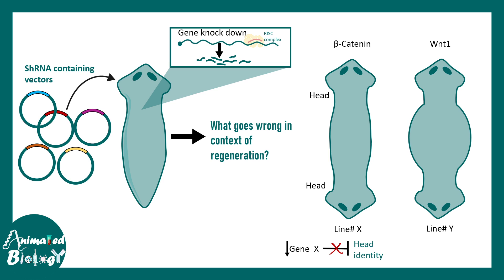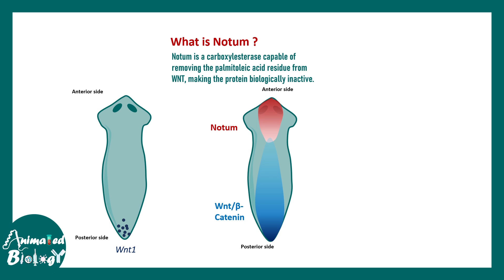In more detail: Wnt1 molecules are specifically expressed on the posterior side — they are posterior-preferring molecules that prevent anterior identity. There is also a Wnt inhibitor present on the anterior side of the head. Wnt is produced from the posterior side, but Wnt signaling is inhibited on the anterior side. Notum is the molecule responsible — it is a classic inhibitor of canonical Wnt signaling.